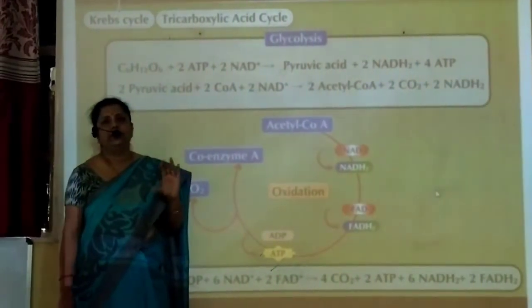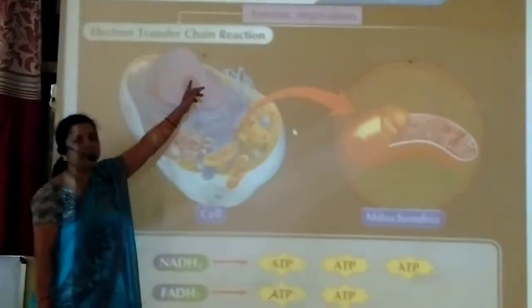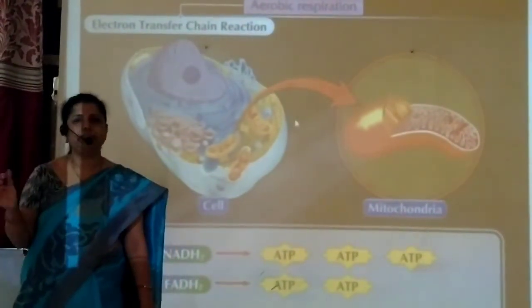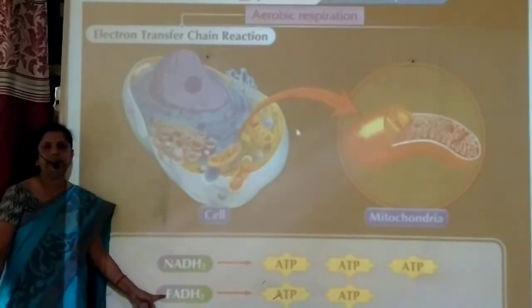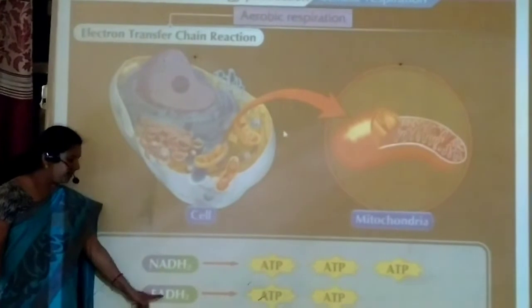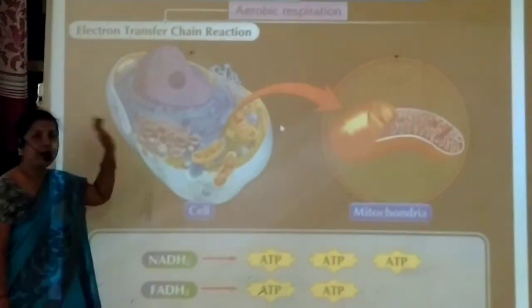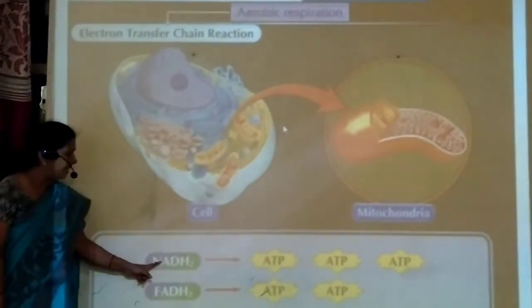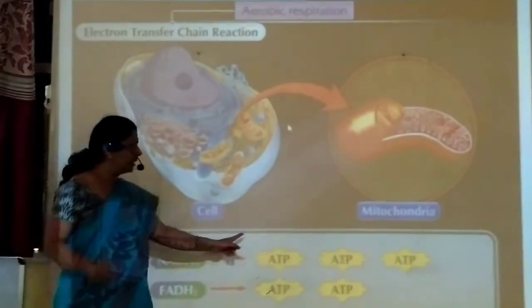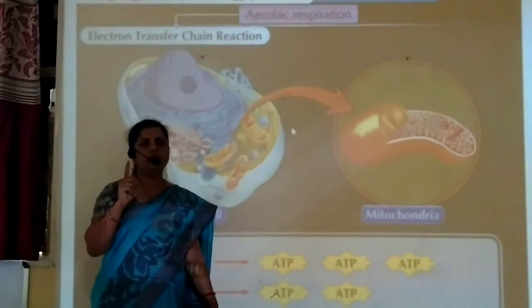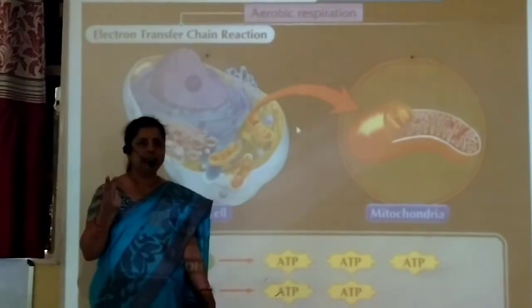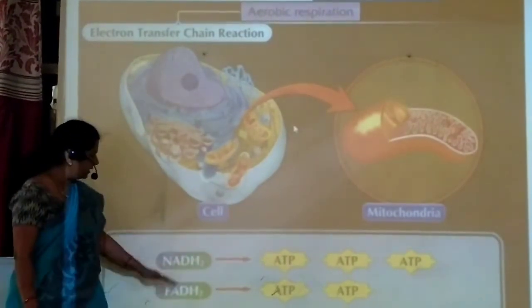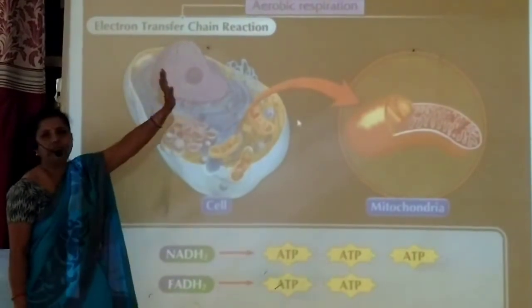The third step is the electron transfer chain reaction. During both glycolysis and the Krebs cycle, NADH2 and FADH2 are released. In the electron transfer chain reaction, each molecule of NADH2 gives 3 molecules of ATP, and each molecule of FADH2 gives 2 molecules of ATP. This is how energy is released from NADH2 and FADH2 in the third step.